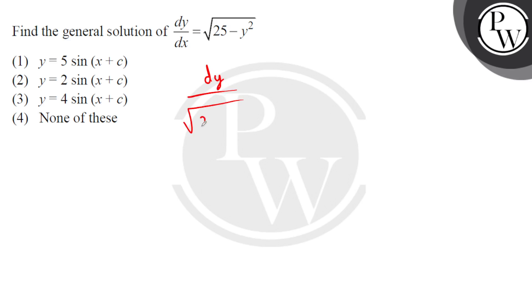...under root of 25 minus y square, and that equals dx. Now, 1 upon under root of a square minus x square - if we look at integration, we integrate both sides.